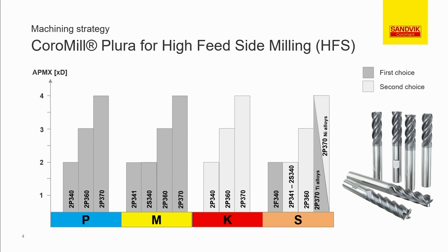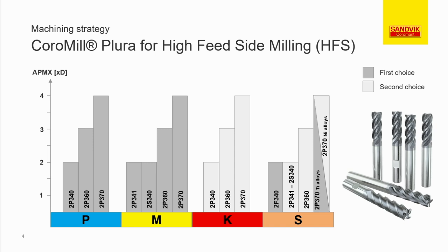In order to effectively machine super-alloyed components, it is very good to have dedicated tools for titanium alloys and dedicated tools for nickel-based alloys. We have from 2x diameter up to 4x diameter dedicated tools for high-feed side milling for different materials, from ISO-S, ISO-K, ISO-M and ISO-P.